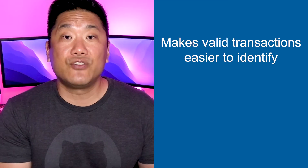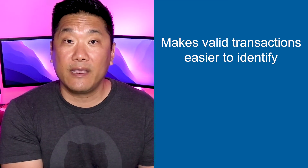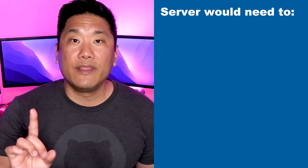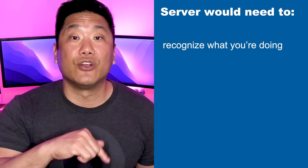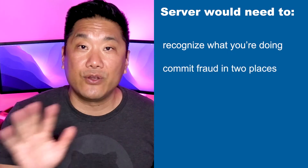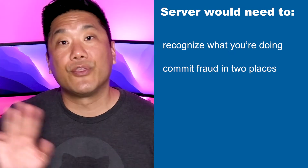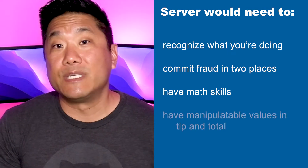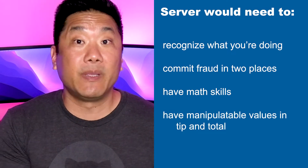Making your total palindromic achieves two things: it makes valid transactions easier to identify, and it makes your paper receipt more tamper resistant. Your receipts become more tamper resistant because if a waiter or waitress wants to rip you off, the following four things need to happen. Number one, they have to recognize that you're purposely making your total palindromic. Number two, they have to manipulate both your tip and your total on the paper receipt. Number three, they have to have the math skills to know what a new tip and total will be. And number four, your paper receipt has to be written in a way that is manipulatable.